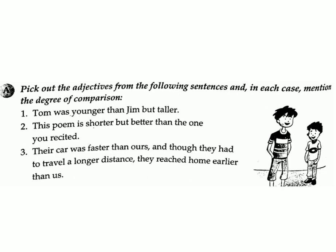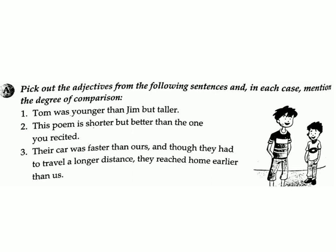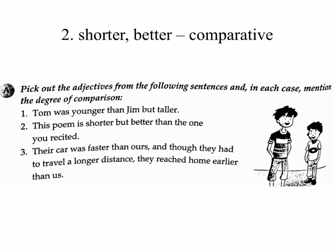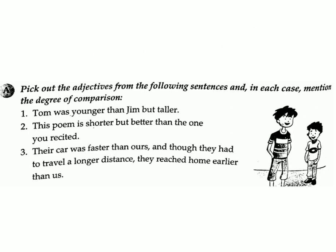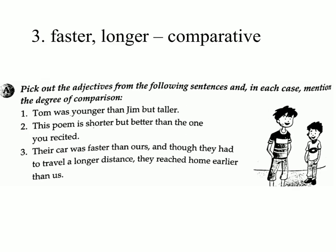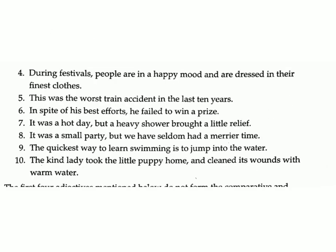Exercise A: Pick out the adjectives from the following sentences and mention the degree of comparison. 1. Tom was younger than Jim but taller. Answer: younger, taller – comparative. 2. This poem is shorter but better than the one you recited. Answer: shorter, better – comparative. 3. Their car was faster than ours, and though they had to travel a longer distance, they reached home earlier than us. Answer: faster, longer – comparative.